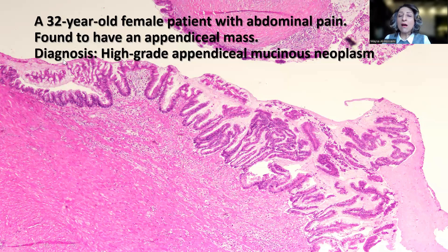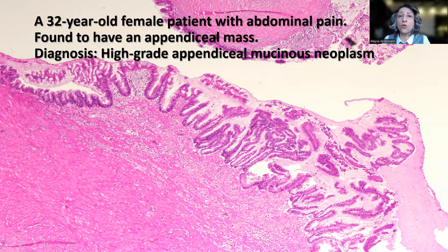But regardless of how aggressive this tumor appears, and regardless of its association with extra-appendiceal mucin, the stage for this tumor is pTis — carcinoma in situ. I hope you find this tip useful in your daily practice. Thank you all.